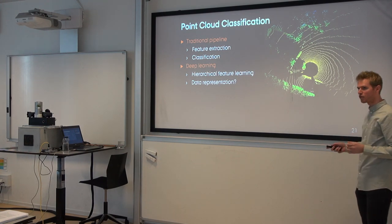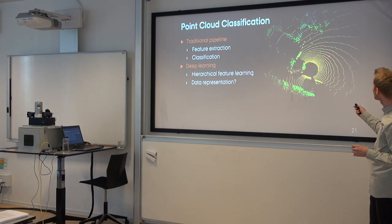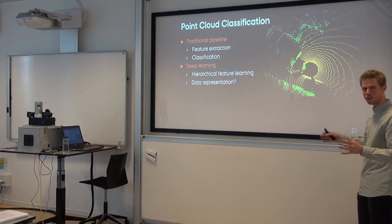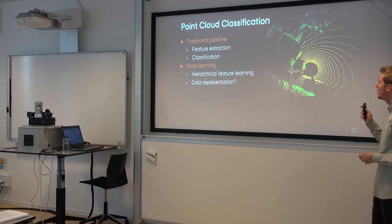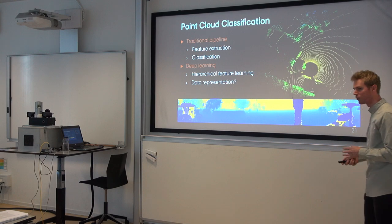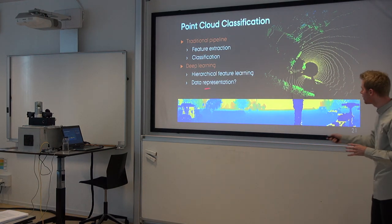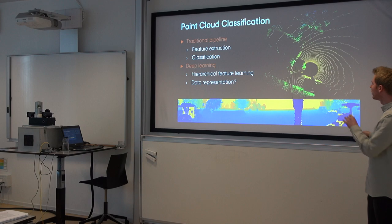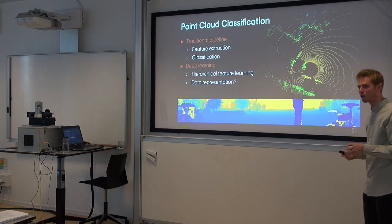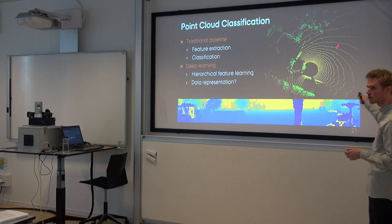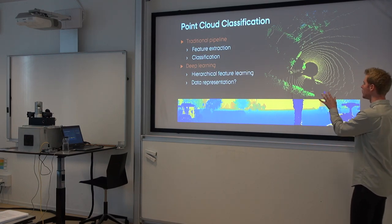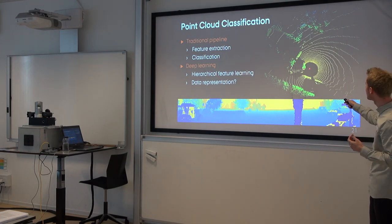For point clouds, however, it's not obvious how to apply these networks, because it's not well-defined what a point's neighbors are and the data doesn't fit into a grid. But we can use a different data representation — a range image, where the image has a height of 32 pixels corresponding to the 32 laser beams, and a width corresponding to the 360-degree rotation. The intensities describe the depth or distance from the sensor to the object. It contains exactly the same information as the 3D point cloud.